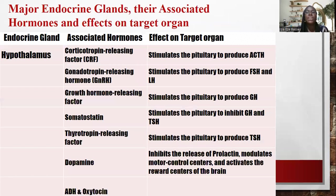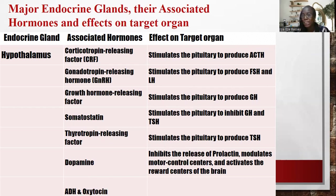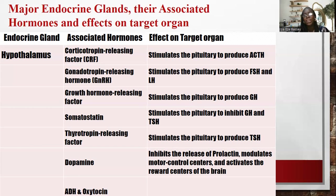Let's look at major endocrine glands and their associated hormones. The first gland is the hypothalamus, situated in the brain — it is the command center for both the neural system and the endocrine system. The hormones it produces include corticotrophin-releasing hormone, which stimulates the pituitary to produce ACTH. Much of what it produces are releasing hormones, with one or two inhibitory factors.